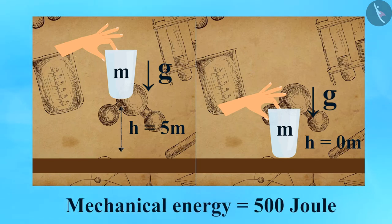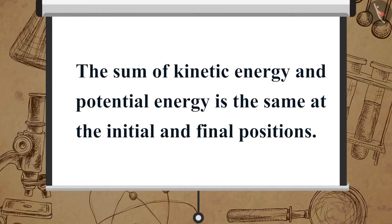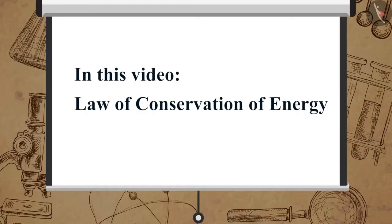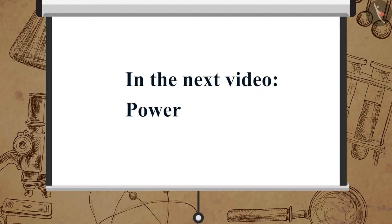On comparing the total energy of the object at both heights, we notice that the total energy remains the same. It shows that the sum of kinetic energy and potential energy is the same at the initial and final positions. Can you calculate the sum at other heights and fill up this table? Then we can see if the total mechanical energy remains constant throughout. In this video, we learned about the law of conservation of energy. In the next video, we will learn about power.